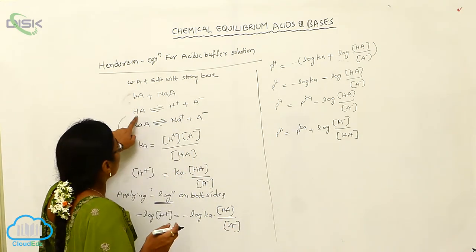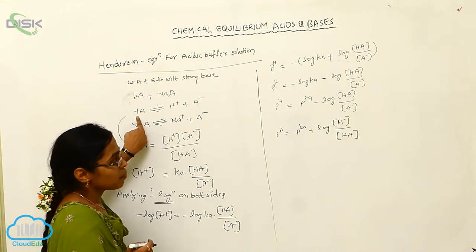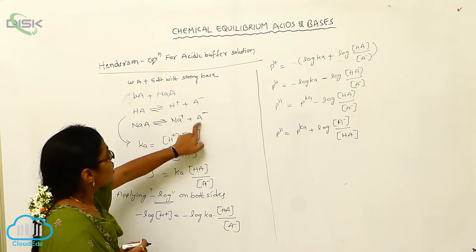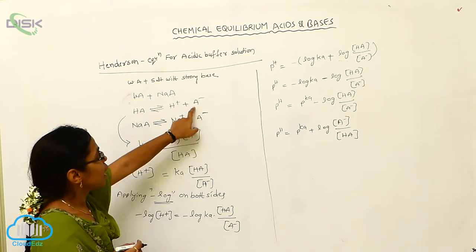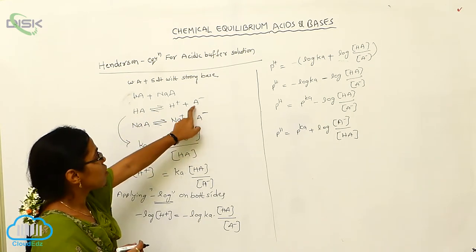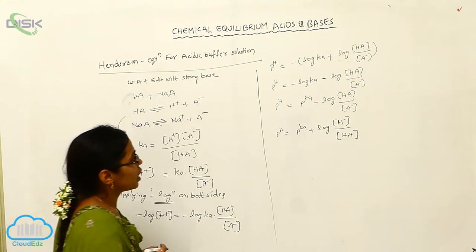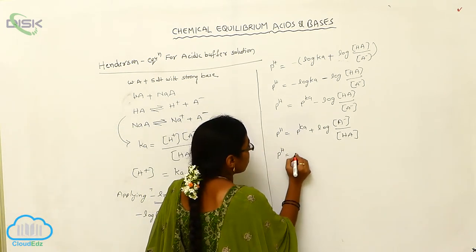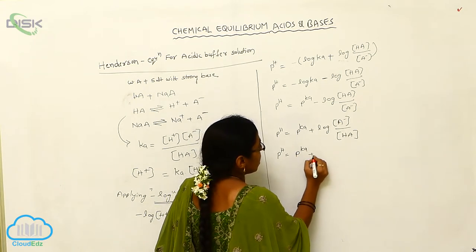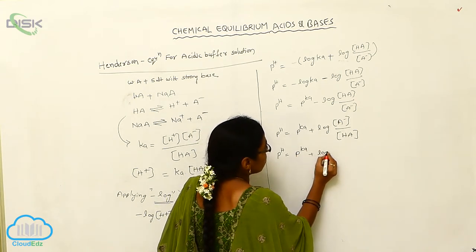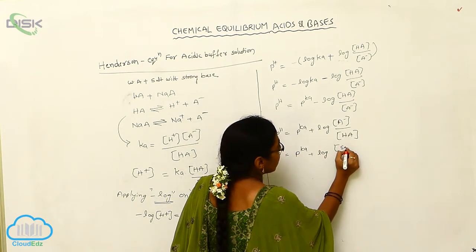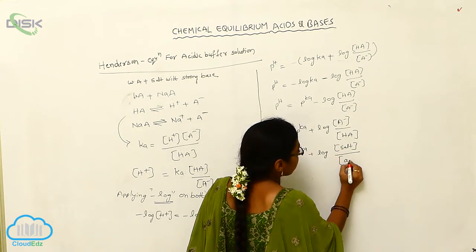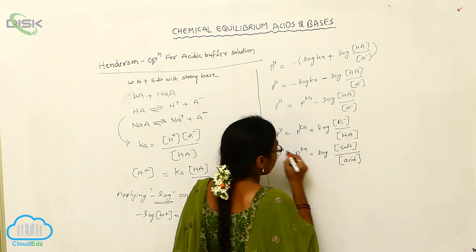Here, HA is nothing but the concentration of acid, and A⁻ is nothing but the concentration of salt. So pH is equal to pKa plus log of the concentration of salt divided by the concentration of acid.